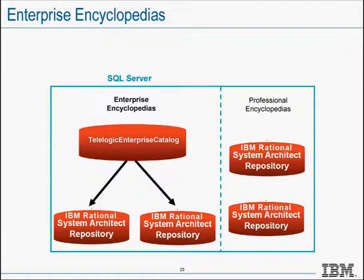Cataloged encyclopedias are termed enterprise. Within System Architect, we term cataloged encyclopedias as enterprise and non-cataloged encyclopedias as professional. Enterprise encyclopedias can be shared among all client types — System Architect, System Architect XP, and System Architect Process Integrator clients can all access an enterprise encyclopedia.